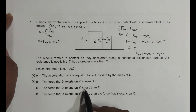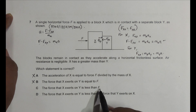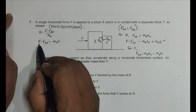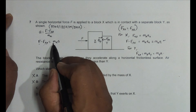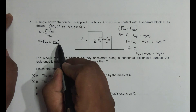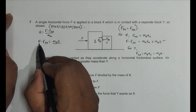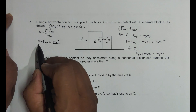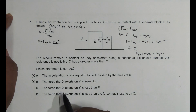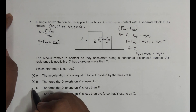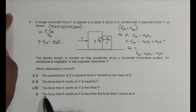Option C states that the force X exerts on Y — F_XY — is less than F. This is true. From the equation F - F_XY = M_X × a, the right-hand side M_X × a is a positive quantity, so F must be greater than F_XY. Therefore F_XY is less than F, which is what option C claims. This is the correct choice.